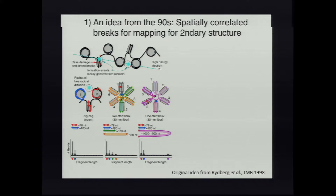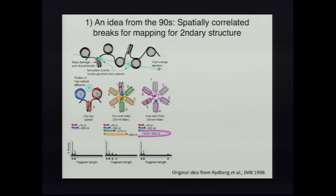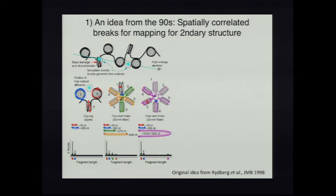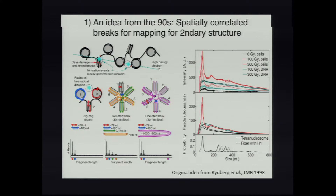We stole an idea from Rydberg et al. from 1998. I think it's always fun to look at old papers and say, okay, now that I have sequencing, what should I do with this technique? The way this works is a high-energy photon comes into chromatin, interacts with water, and generates a cluster of hydroxyl radicals that can cleave the backbone of DNA. If a single event cleaves two backbones of DNA, you can get a single-stranded fragment out. The ends of that fragment were within two nanometers of one another in the folded chromatin structure.